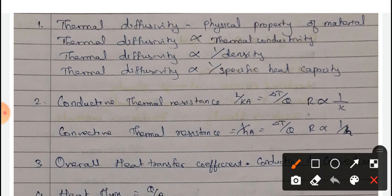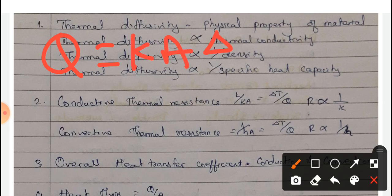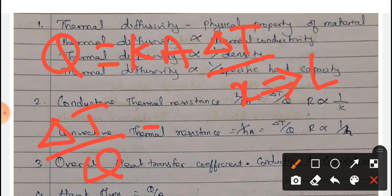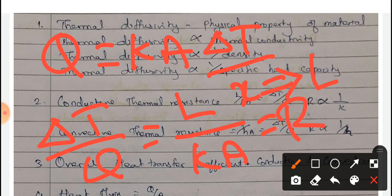Next, the conductive thermal resistance. As we know, for the conduction equation, Q is equal to K A dT/L, where X is the characteristic length replaced with L. Therefore, dT/Q is equal to L/KA. This is the formula for thermal conductive resistance.